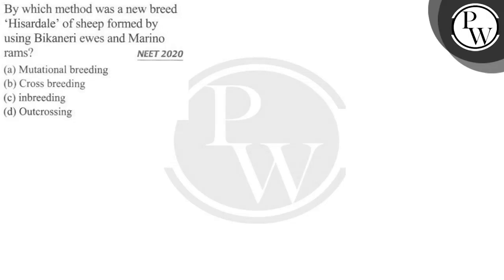Hello, let's read the question. By which method was a new breed Hissardale of sheep formed by using Bikaneri ewes and Merino rams? Option A: Mutational breeding. Option B: Cross breeding. Option C: Inbreeding. Option D: Outcrossing.